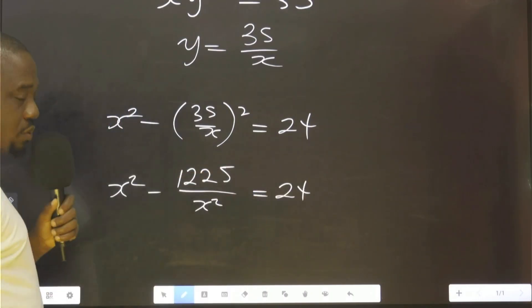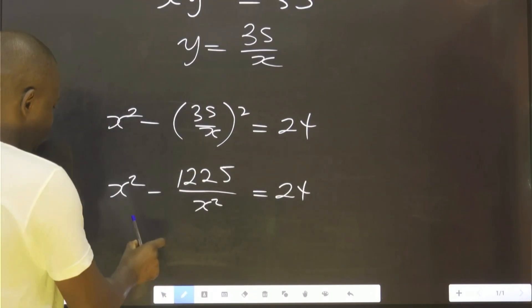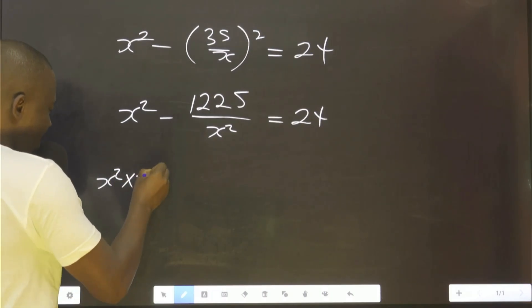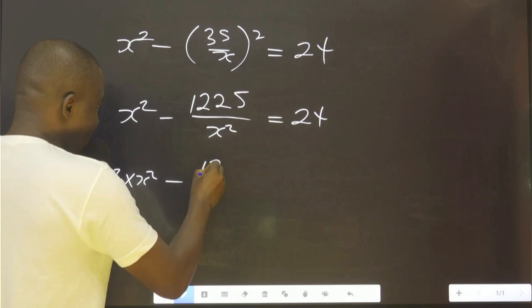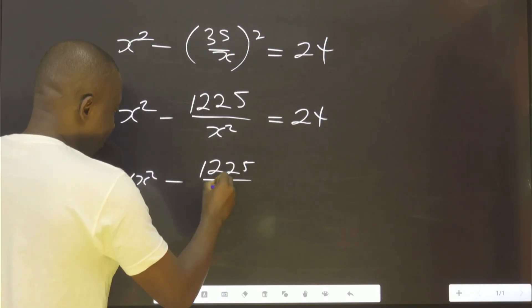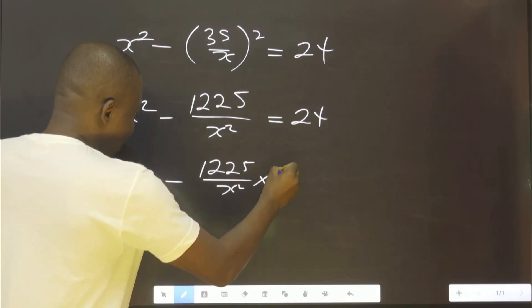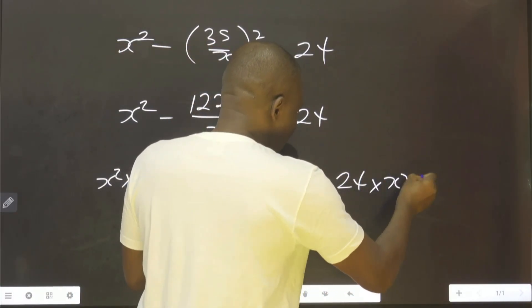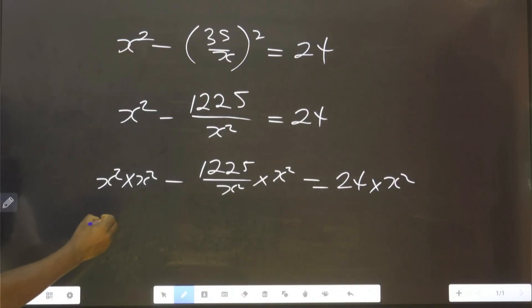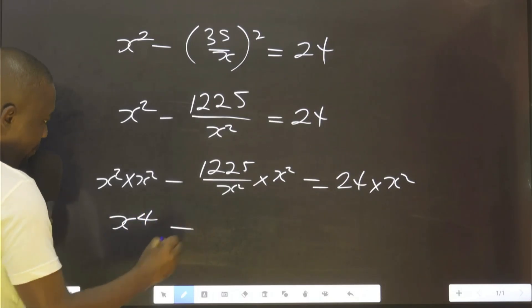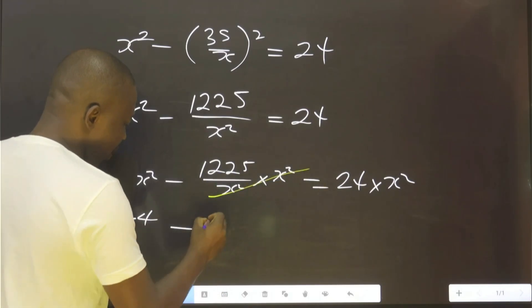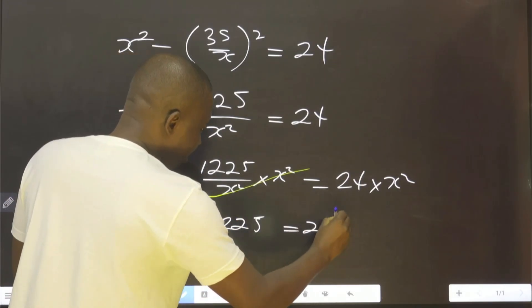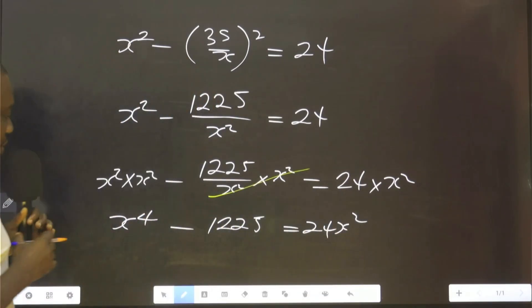So let's multiply throughout by x². That is to say, this multiplied by x² minus this multiplied by x² equals 24 multiplied by x². This will give us x⁴ minus 1225 equals to 24x².